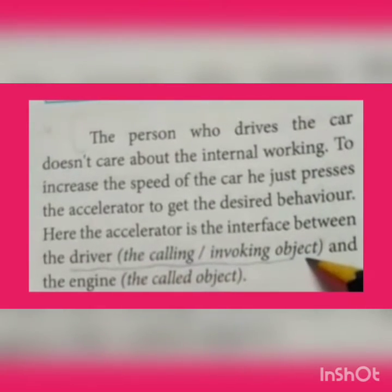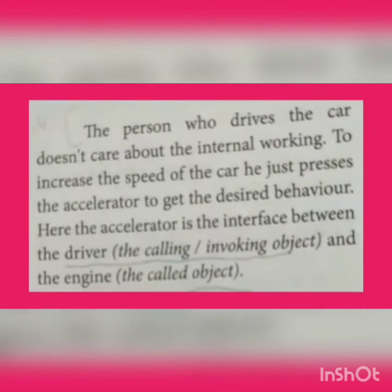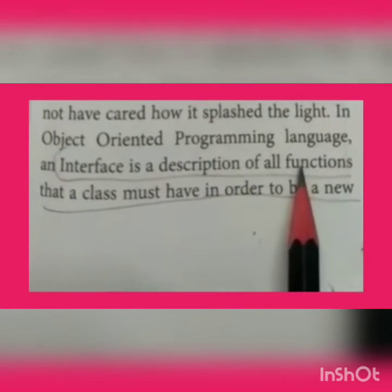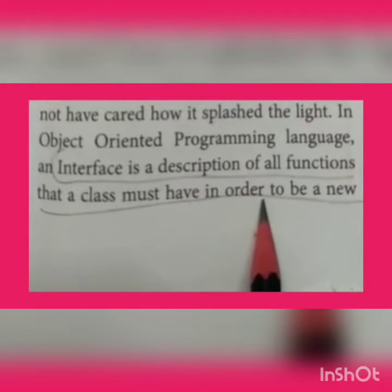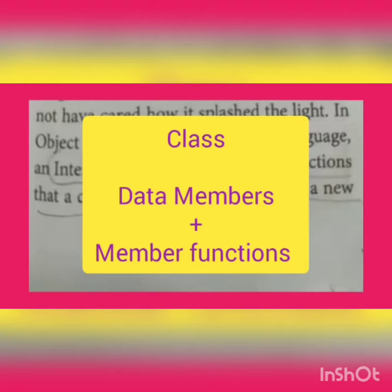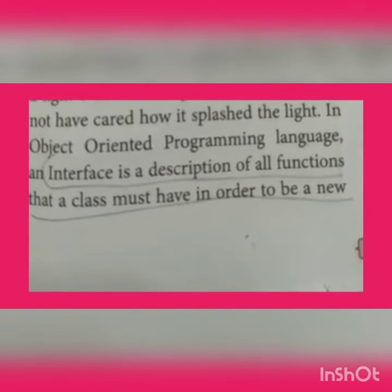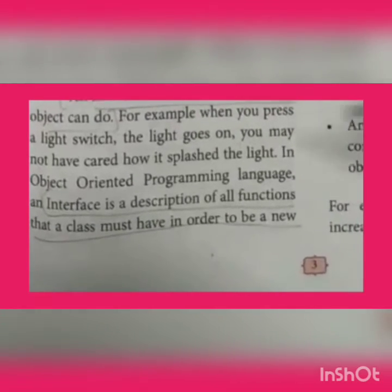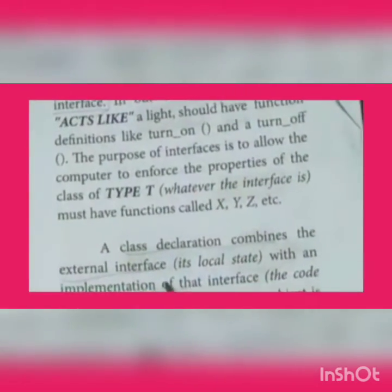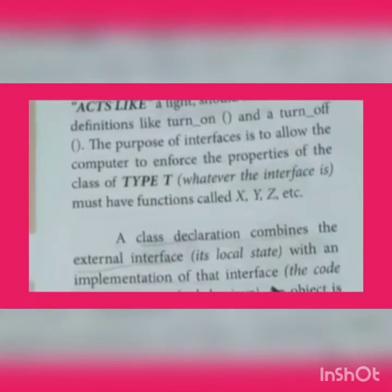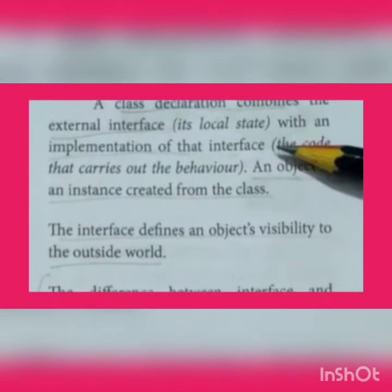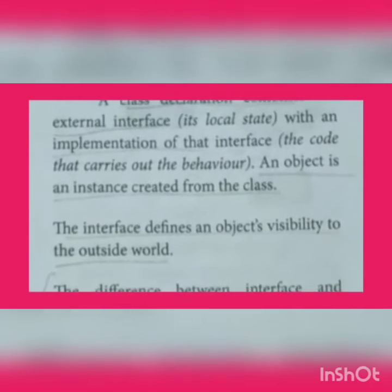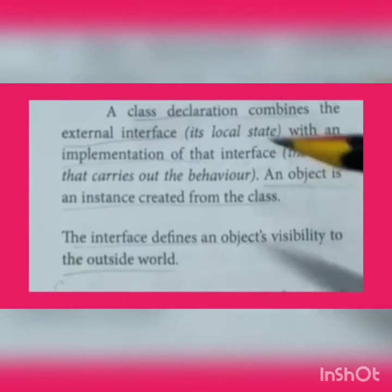In object-oriented programming, classes and objects are the main concepts. A class is nothing but a collection of data members and member functions together in a single unit. The class declaration combines the external interface with an implementation of that interface. Just declaring a class alone is not going to fetch us anything unless an object is created for that class — an object is an instance created for the class.